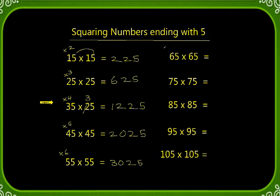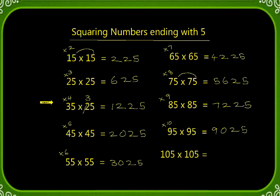65 squared: 6 times 7 is 42, then 25. 75 squared: 7 times 8 is 56, then 25. 85 squared: 8 times 9 is 72, then 25. 95 squared: 9 times 10 is 90, then 25. This is applicable even for 3 digit numbers. 105 squared: next number of 10 is 11, 10 times 11 is 110, 5 times 5 is 25. So 11,025.